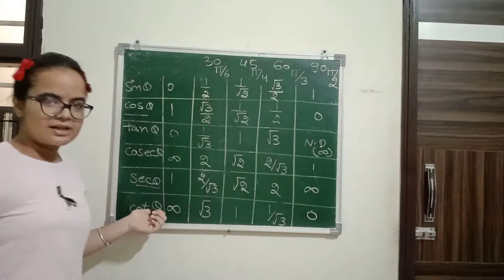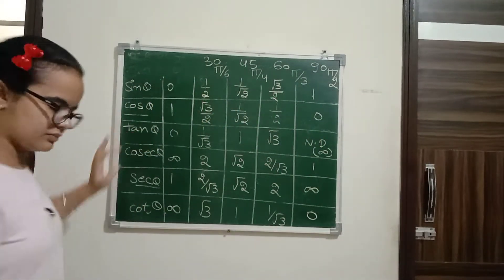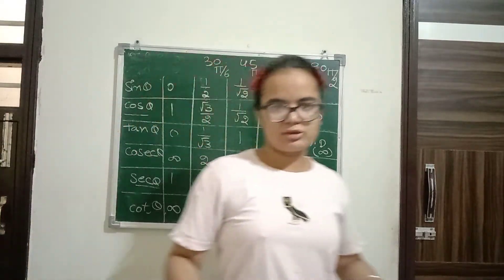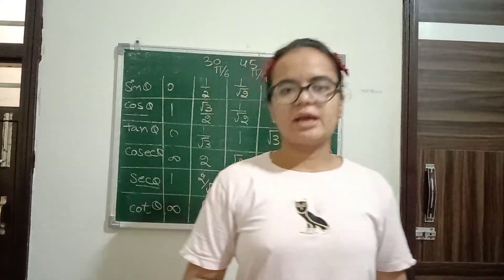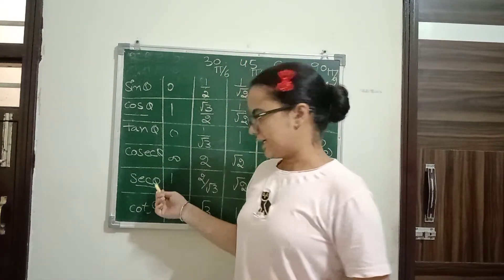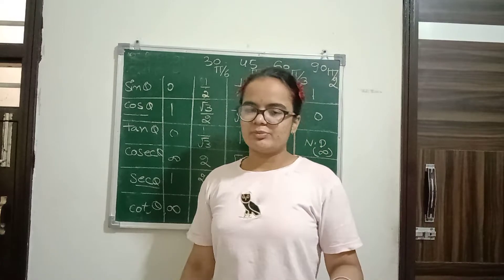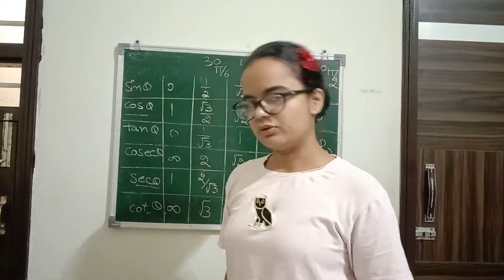Now cot theta is the reciprocal of tan theta. Basic thing you know: cosec is the reciprocal of sin theta, secant is the reciprocal of cos theta, and cot is the reciprocal of tan theta.